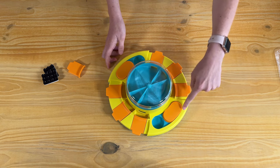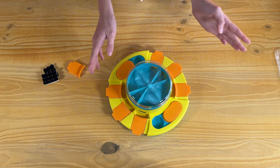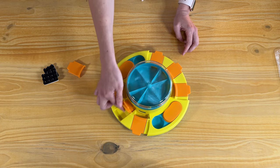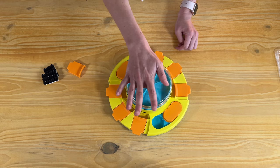So this has two different levels. Level one is just hiding treats in here and moving these covers around. And then level two, the puzzle is you put food in these little caps and your dog can flip them to reveal the food.